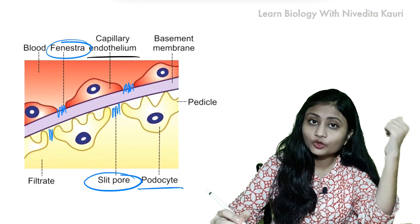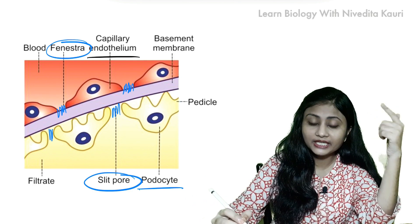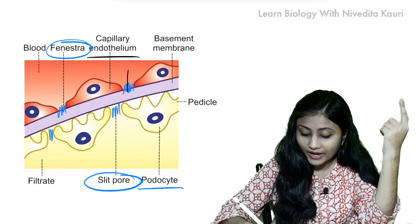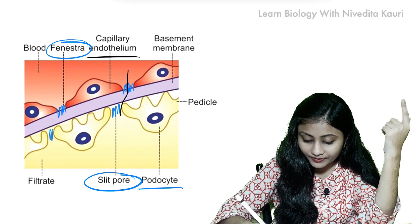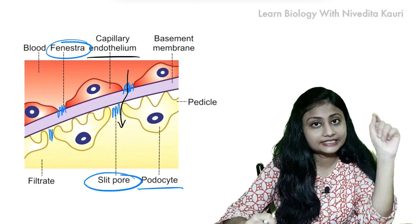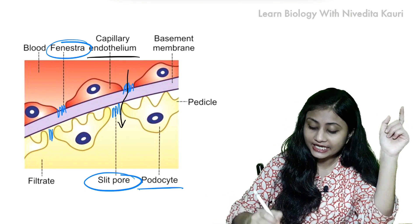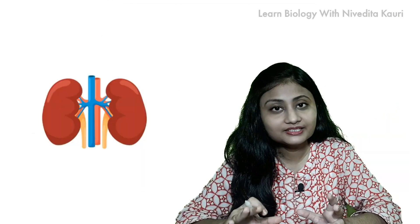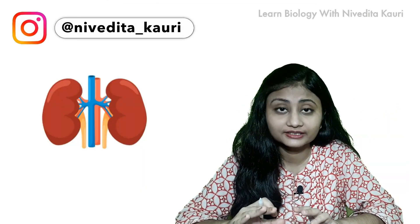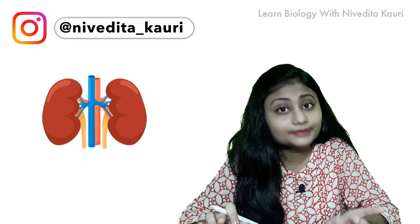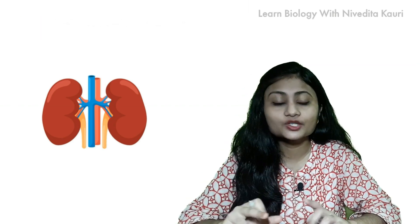The fluid leaves the glomerular capillaries through the fenestrae, then passes through the basement membrane, and then passes through the slit pores, ultimately reaching the Bowman's space. Blood is so finely filtered that almost all constituents of plasma, except the plasma proteins, pass on to the space of the Bowman's capsule.